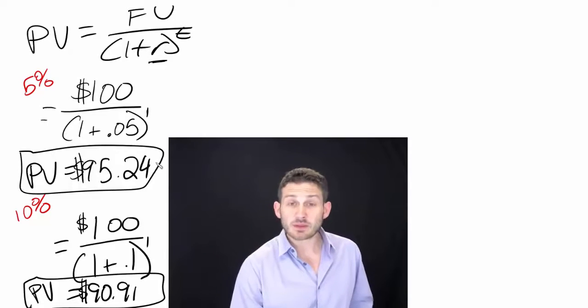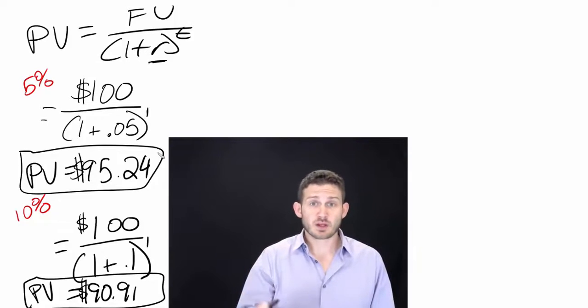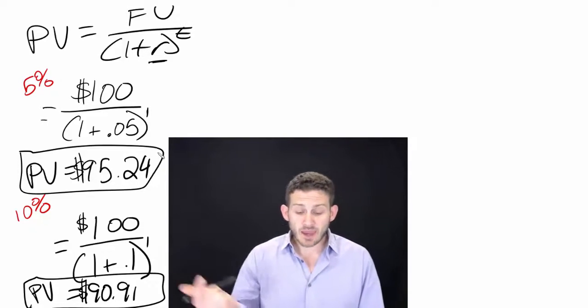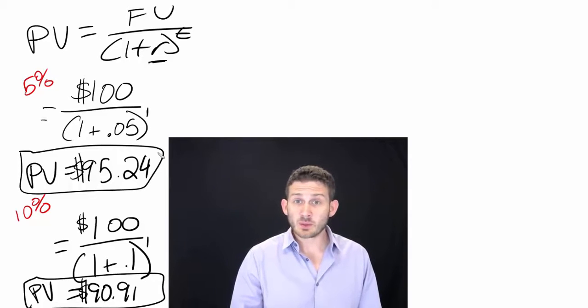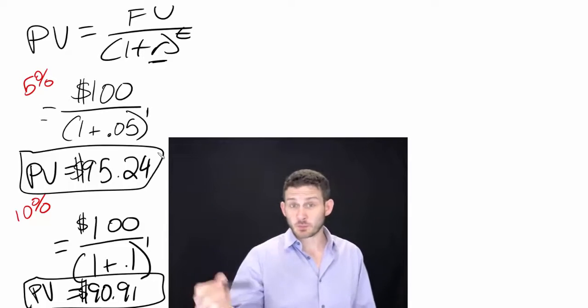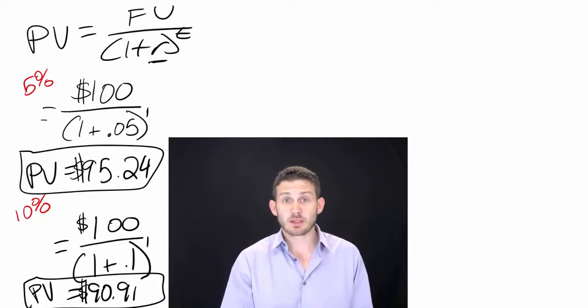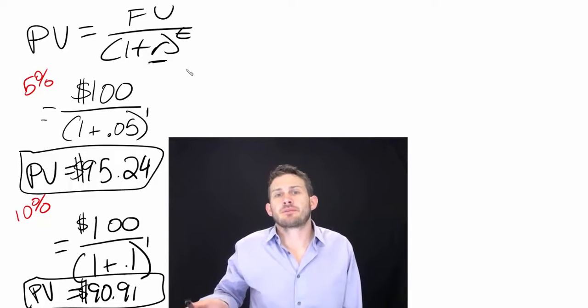Because what we're doing here is that we are taking the present value, that $95.24, and that's basically adding a 5% interest rate on top of that. And 5% of $95.24 is going to be—you guessed it—$4.76. Basically, $4.76 plus $95.24 equals that $100. And all this stuff, check my math—just make sure that I'm giving you the right information.